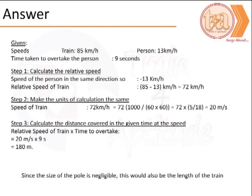The next step is that we need to get the units of calculation consistent with that of the time. We do that as in the earlier example, and we have the speed of the train as 20 meters per second.